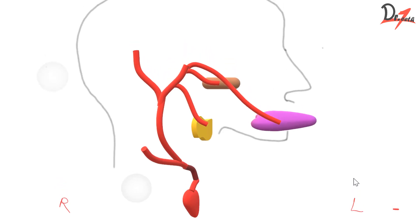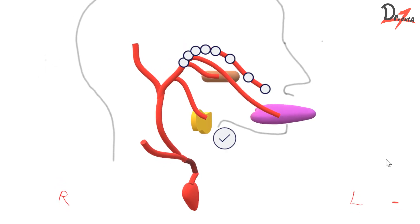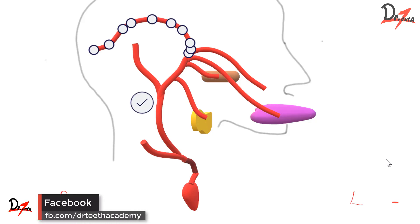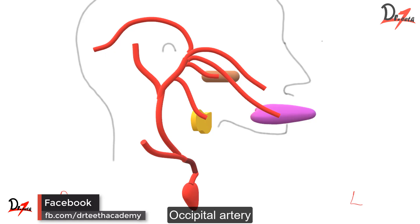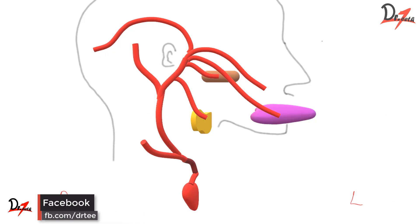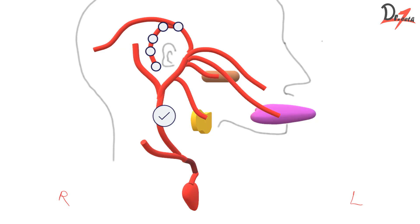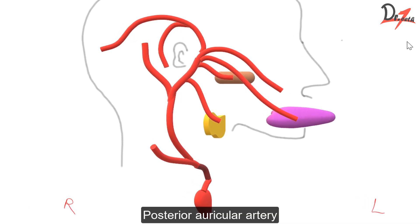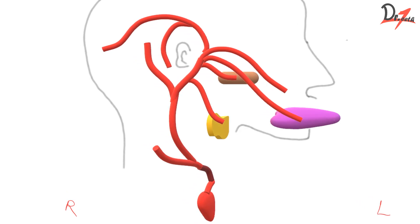Now we have a more clear picture. As you can see, we have this branch called the facial artery, which is also an anterior branch. Then we have this artery going towards the occipital bone called the occipital artery — it is a posterior branch. And we have an artery just posterior to the ear, so that is why it is called the posterior auricular artery. Auricular refers to the ear, and it is a posterior branch.